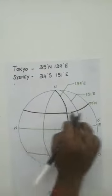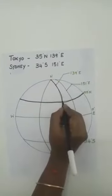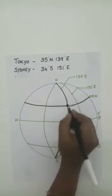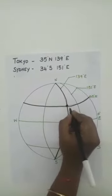The intersection of latitude and longitude is located here. This is Tokyo's location.